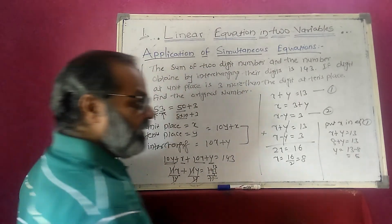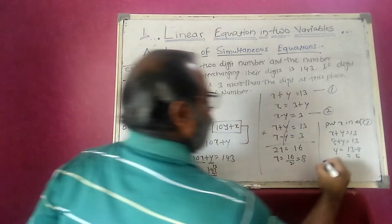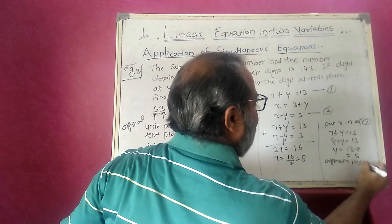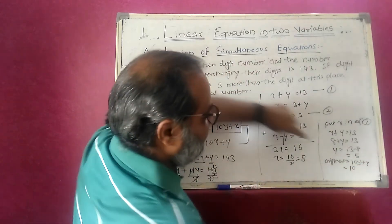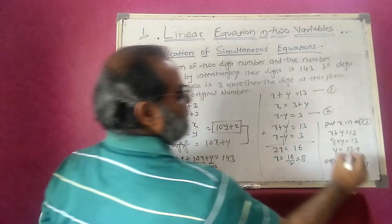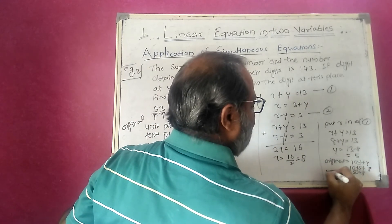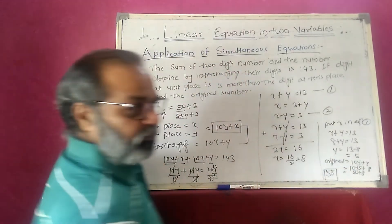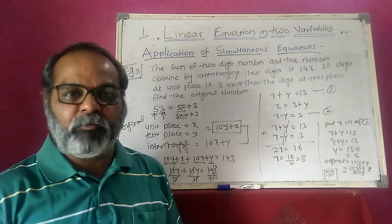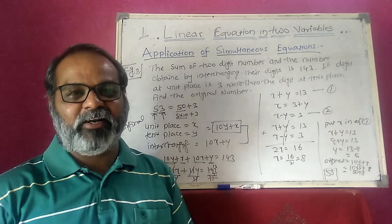The original number is 10y plus x, so it is 10 times 5 plus 8 equals 50 plus 8 equals 58. The original number is 58. If you have any problems or queries, please comment and I will definitely solve them. Thank you.